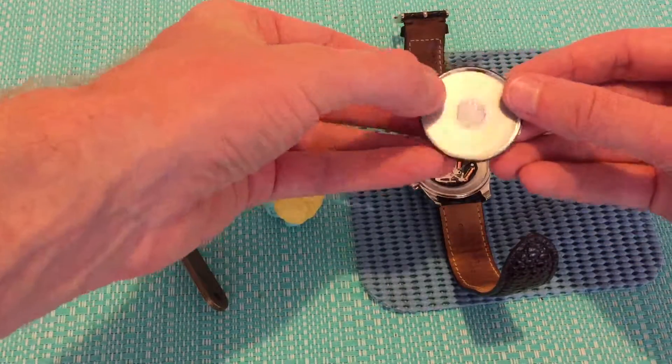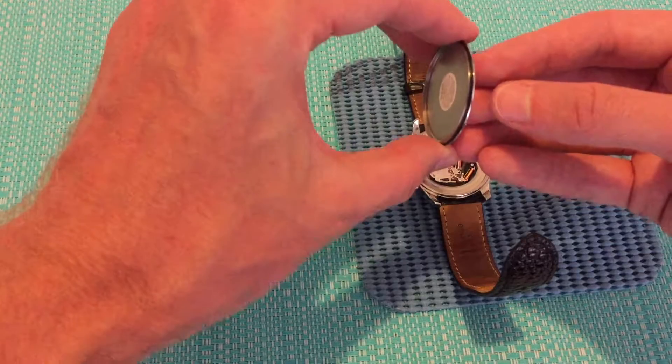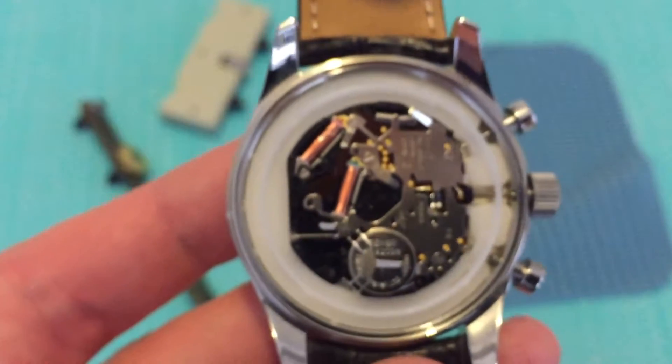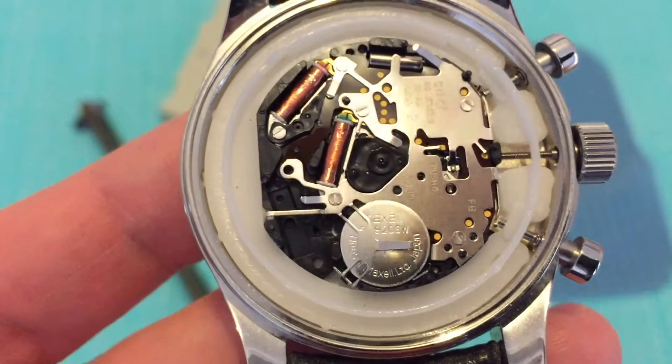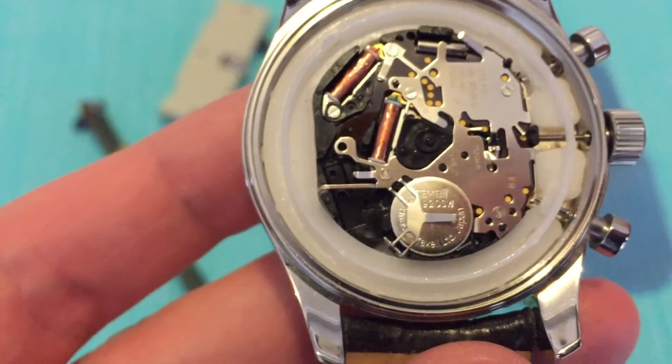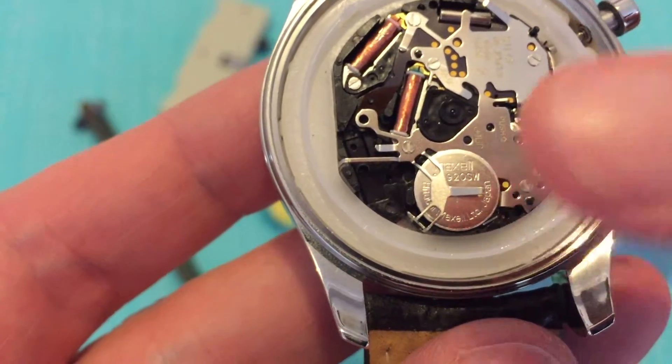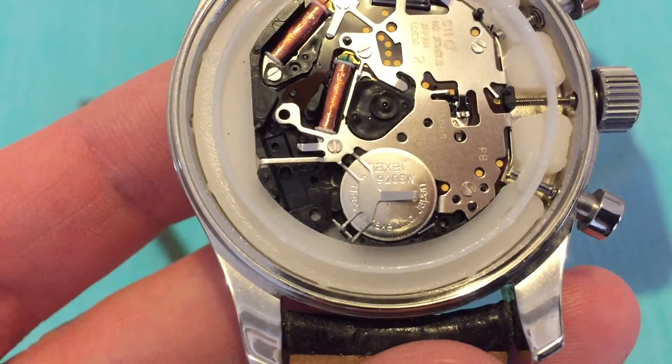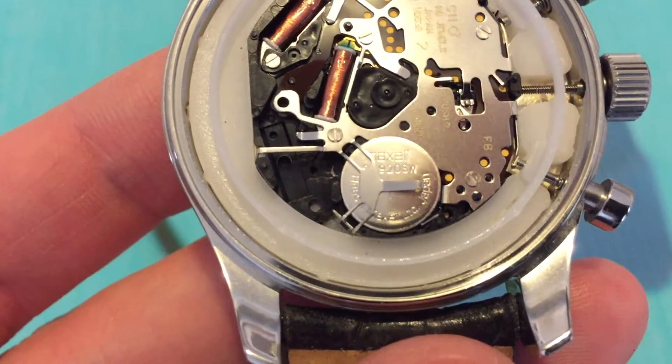Just need to double-check that ring stays intact on the back. Now with the back off the case, have a look at the battery. You can see the battery is just down the front here. Get that model number—in this case it's a Maxell brand battery, 920 SW.